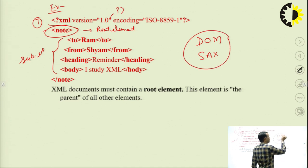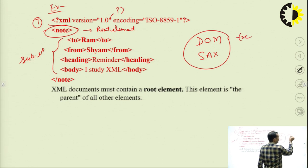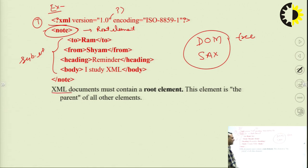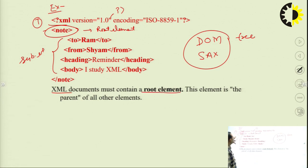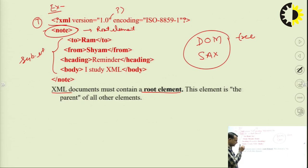These are the XML processing models used to store data. When we store an XML document, it contains a root element. The root element is the first and outermost element of the document. This is the simple code structure of an XML document.